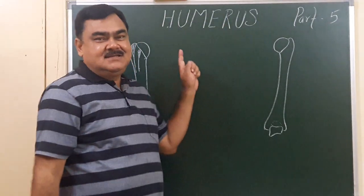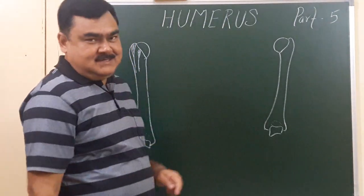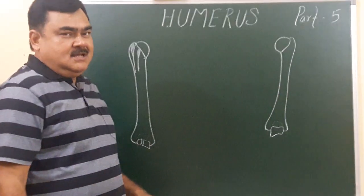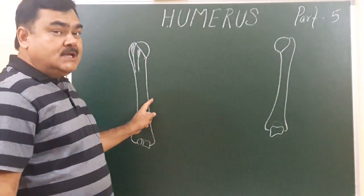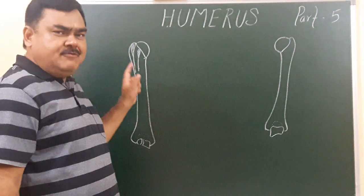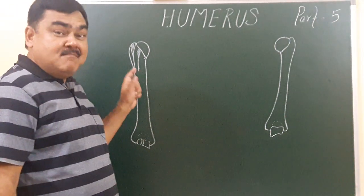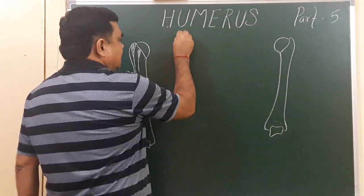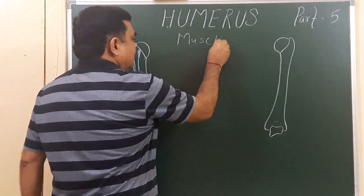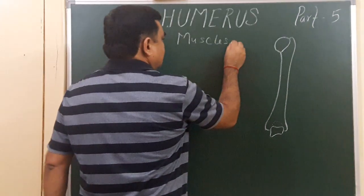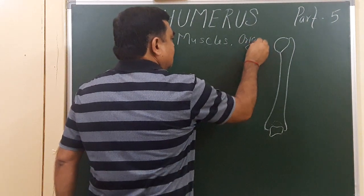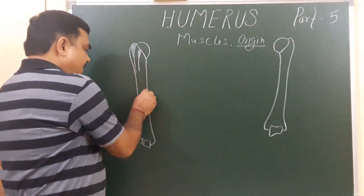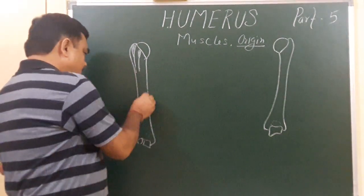We'll discuss the attachments on the humerus. This is the anterior aspect of the humerus and this is the posterior aspect of the humerus. Now we'll discuss about the structures — the muscles which take origin from the humerus.